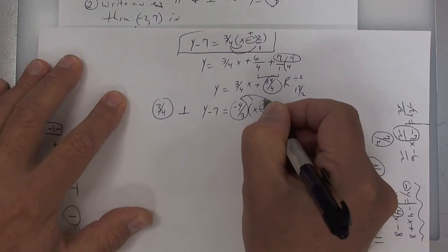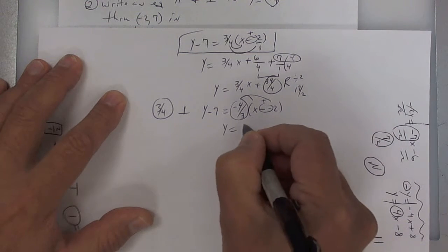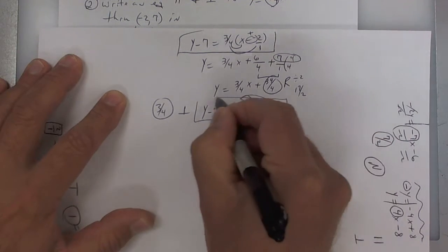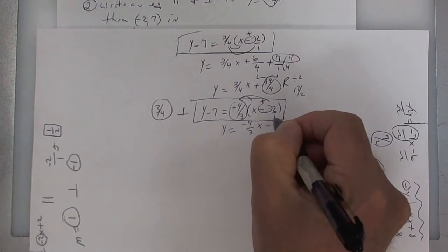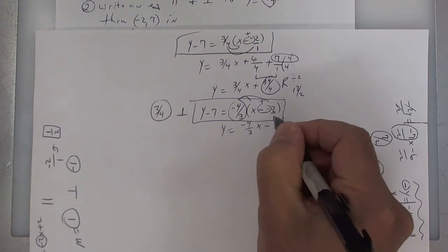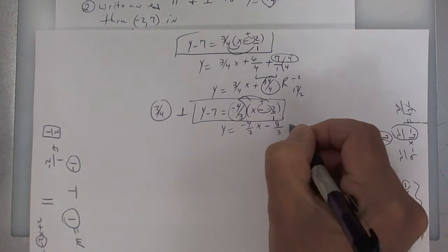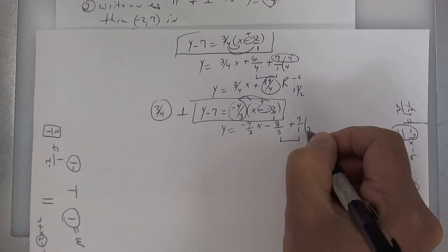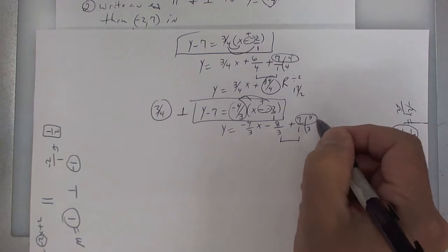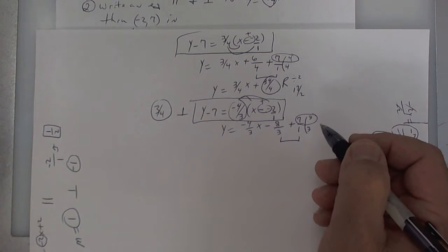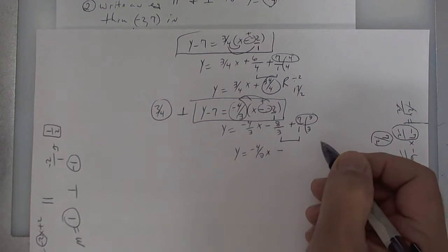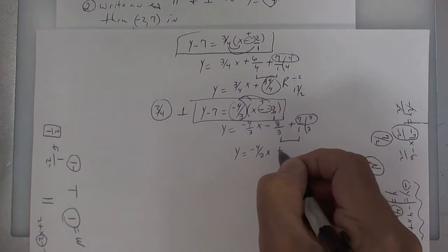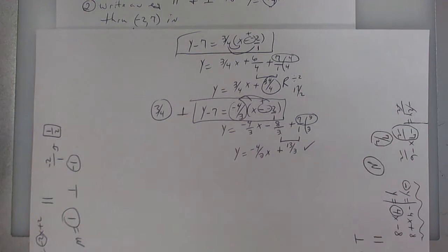You're going to distribute. This technically is a plus, so you get y equals negative 4 over 3x. This is point slope. Moving on — a negative times a positive is negative. Put a 1 under here; 4 times 2 is 8 over 3, because 3 times 1 is 3. Then move the 7, put plus 7 over 1. Your least common denominator is 3, so multiply by 3. That's 21 minus 8, which is 13. The final answer is y equals negative 4 over 3x plus 13 over 3. That is perpendicular in slope-intercept form.